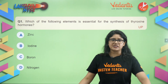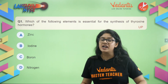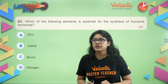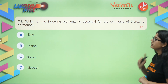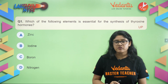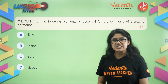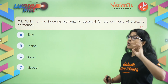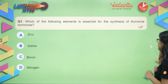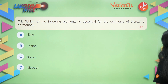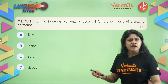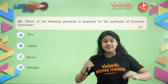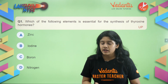I will not be taking much of your time — I know that you are studying and I'm here just to help you. This is a paper of Uttar Pradesh, and one more state will come. The first question on screen: which of the following elements is essential for the synthesis of the thyroxine hormone? Thyroxine hormone is secreted by the thyroid gland.